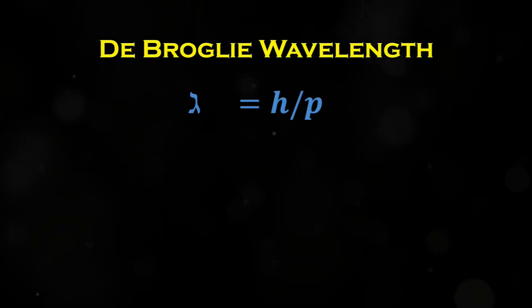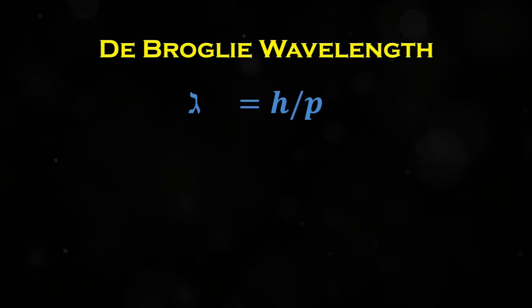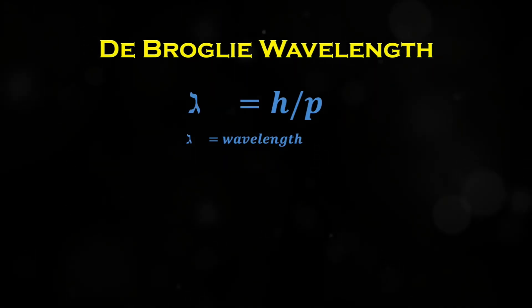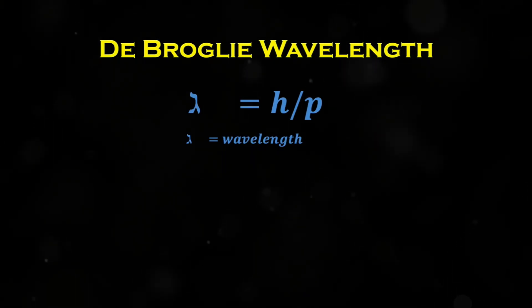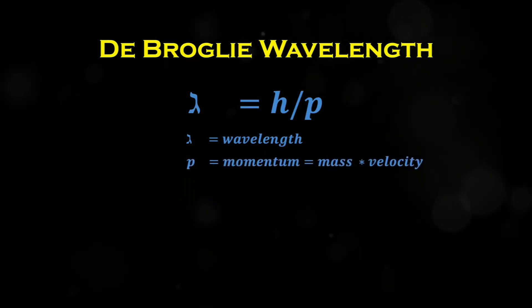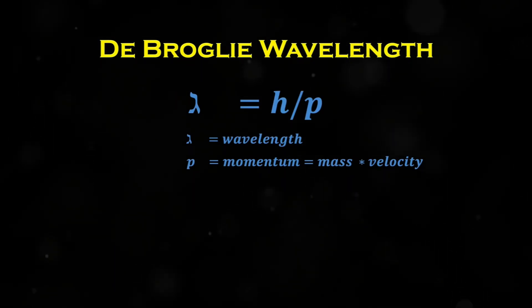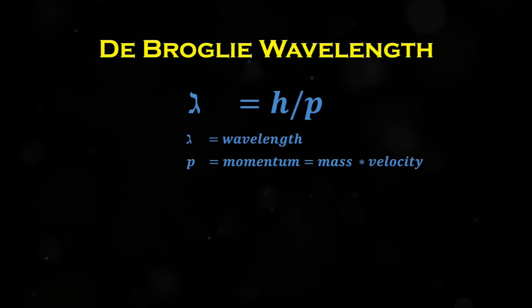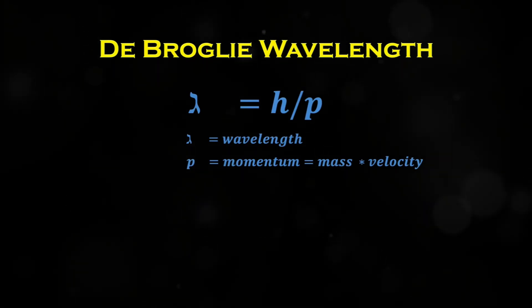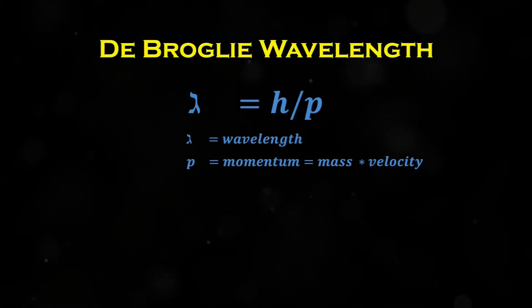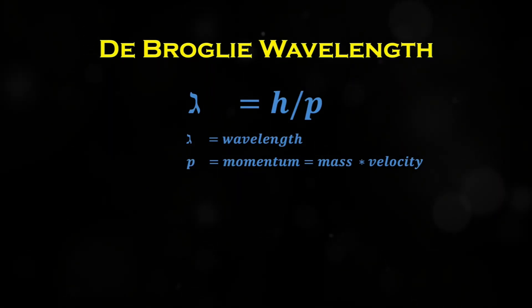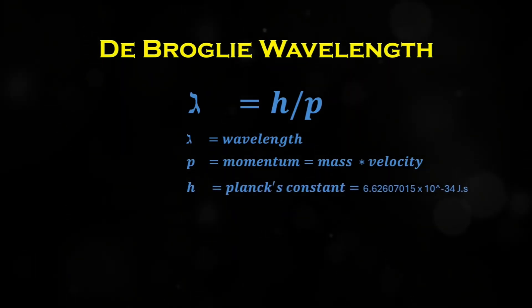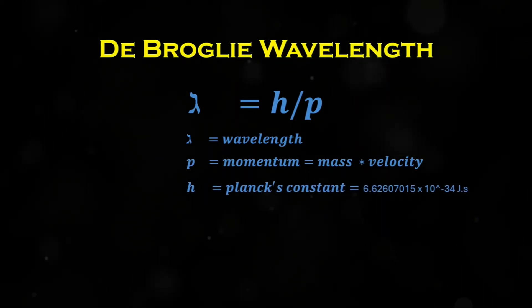Let's break it down. Lambda represents the wavelength of the particle, showing how much it behaves like a wave. A longer wavelength means it's more wave-like. P stands for the momentum, which is the product of mass and velocity of the particle. It tells us how much this acts like a particle. The greater the momentum, the more particle-like it becomes. Finally, h is Planck's constant, a fundamental number in quantum mechanics, which is an incredibly tiny value.